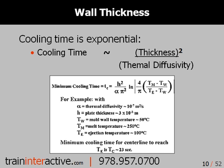Although many people instinctively know that a thinner part improves part cooling, what most people don't realize is that cooling time is exponential to part thickness — that is to say, it's not linear. Although this common cooling equation looks complex, it really breaks down to the following: theoretical cooling time uses a few factors to relate the thickness squared divided by the thermal diffusivity of the material. In essence, every doubling in wall thickness quadruples the theoretical part cooling time.